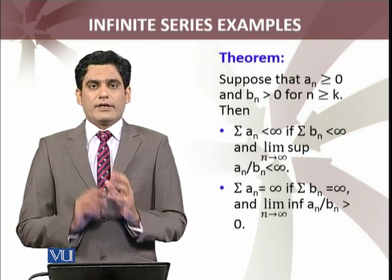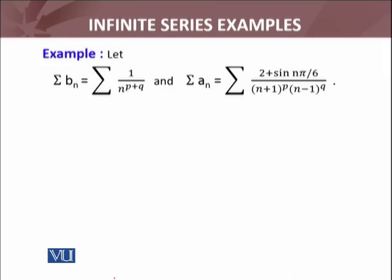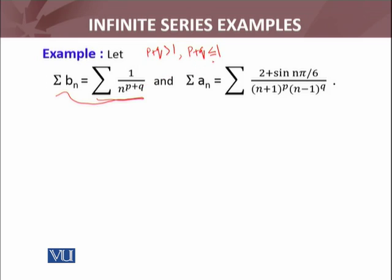Let us apply this to a particular example. Let summation bₙ = 1/nᵖ⁺ᵍ — this is in fact the harmonic series, and we know that 1/nᵖ⁺ᵍ is convergent if p+q > 1 and it is divergent if p+q ≤ 1. So summation bₙ will be convergent if p+q > 1 and divergent if p+q ≤ 1.